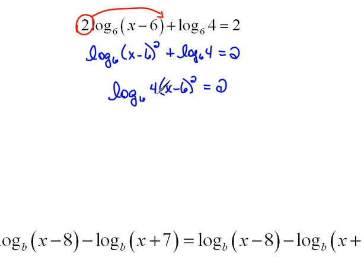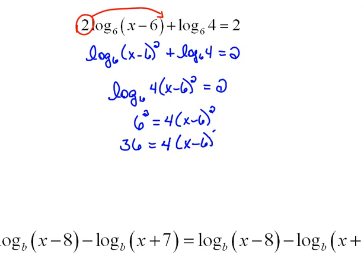Now I have a log of something equal to a number. I cannot just drop the log, but I can change the form. If I take the base of 6 and raise it to the other side as the exponent of 2, that should equal the argument, which is 4 times the quantity x minus 6 squared. So 6 squared is 36, equals 4 times x minus 6 quantity squared. We can divide both sides by 4 to get that squared part by itself, giving 9 equals x minus 6 squared.